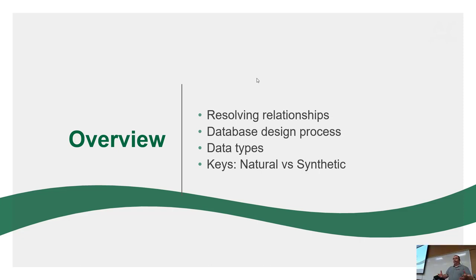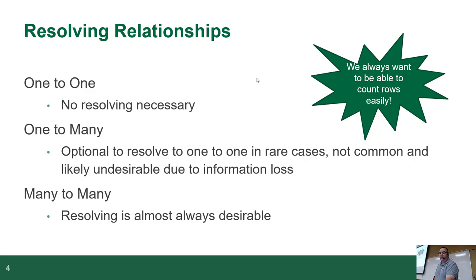Time permitting, I'm only going to go for about another half hour, because there was a lot of information just dumped into your brains and I'm not going to punish you with too much. We're going to talk about resolving relationships and the database design process. For a one-to-one relationship, you don't need to resolve it — it's at its most basic state. A one-to-many is optional to resolve, and it's probably undesirable. Many-to-many: it is physically impossible to do in a modern database if it's a good database engine.